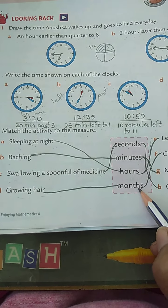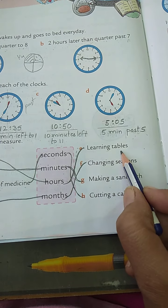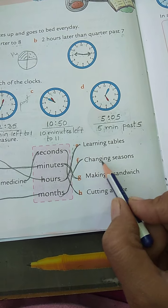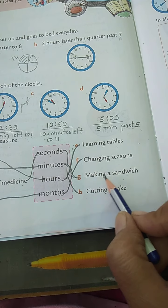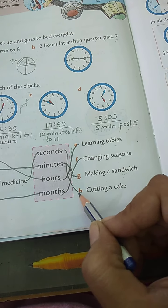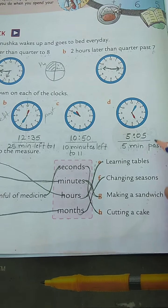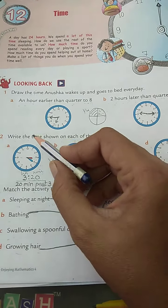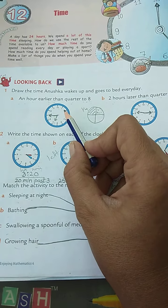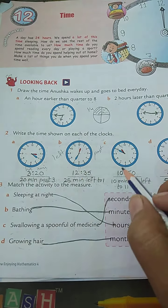Growing hair, months. Same way, learning tables, it will take hours. Changing seasons will take months. Making a sandwich, minutes. And cutting a cake will take seconds. Here we are ending with our exercise Looking Back, and in next video I will continue further.